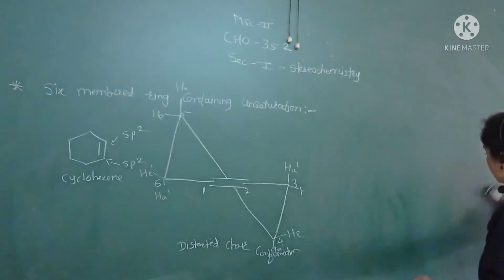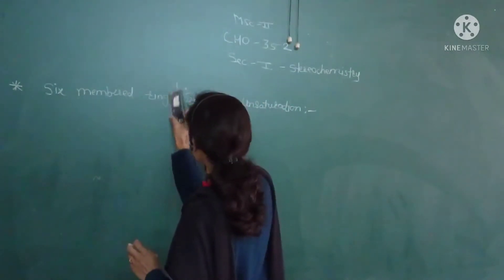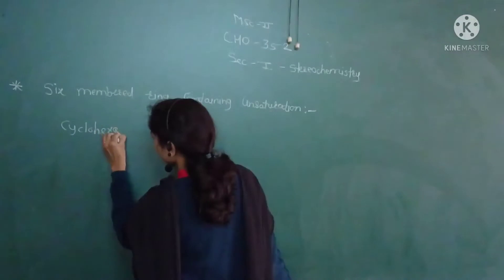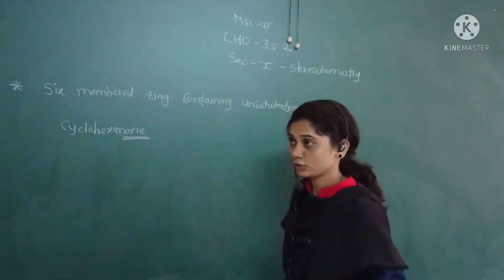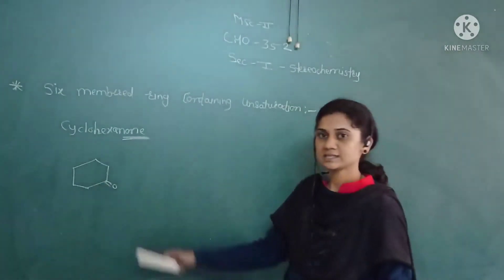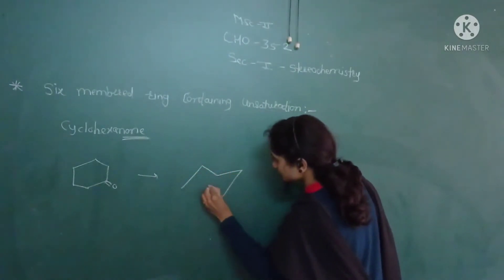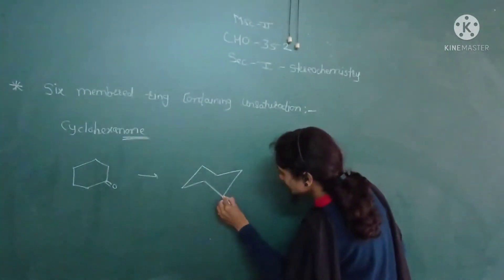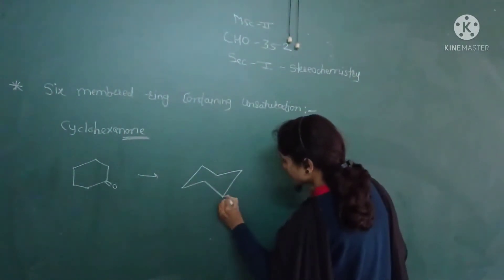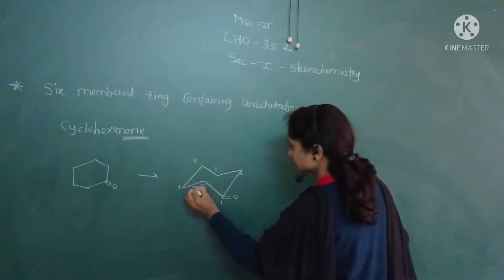Cyclohexanone is also a six-membered ring containing unsaturation; 'one' or '-one' indicates a ketone. The structure of cyclohexanone drawn in the chair form shows carbons numbered one through six, with this being the chair conformation of the cyclohexanone ring.